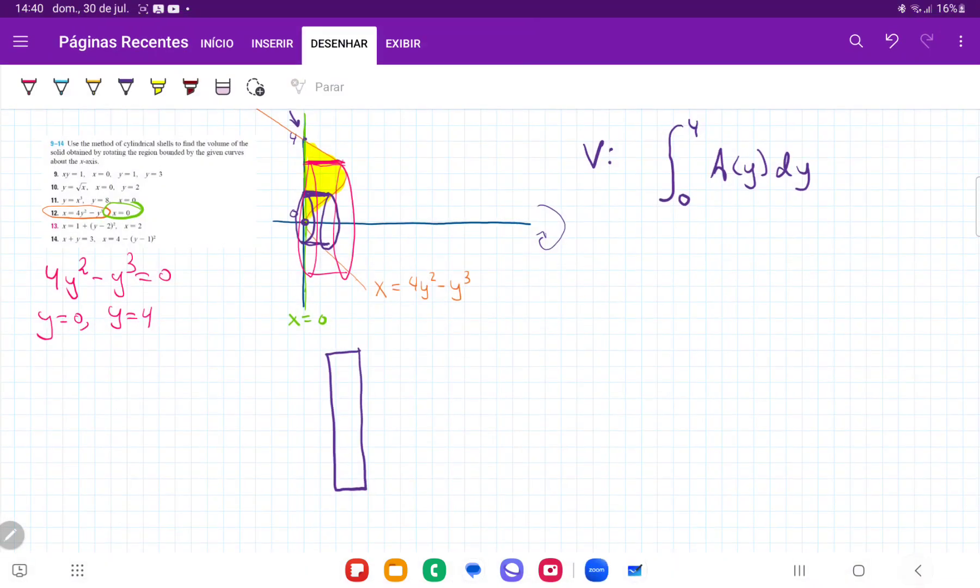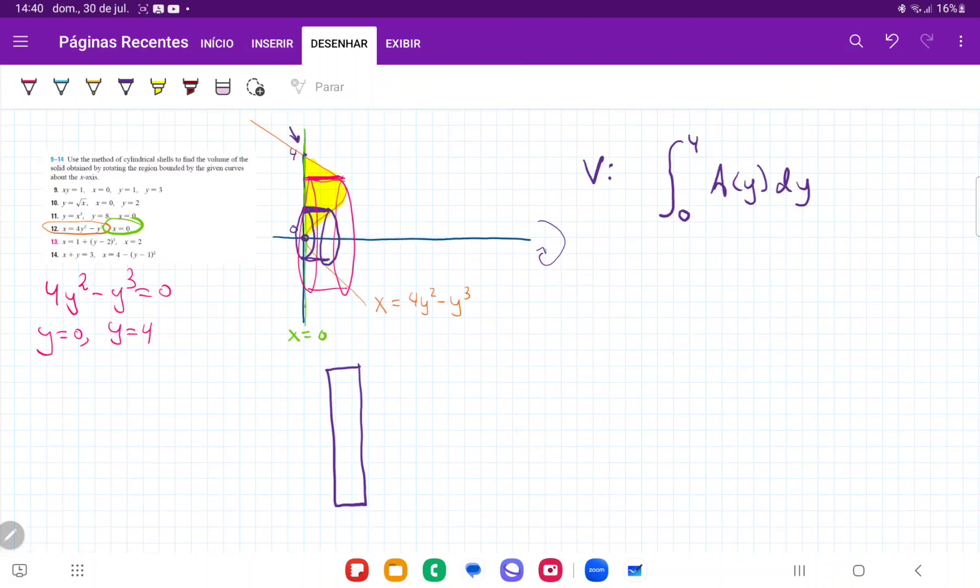So we're summing up all these areas, right? The area of these cylinders. And the reason that I put A(y) as a function of y is because we're summing them up vertically, right? And they're definitely functions of y, because as we can see, as we move up the y-axis,